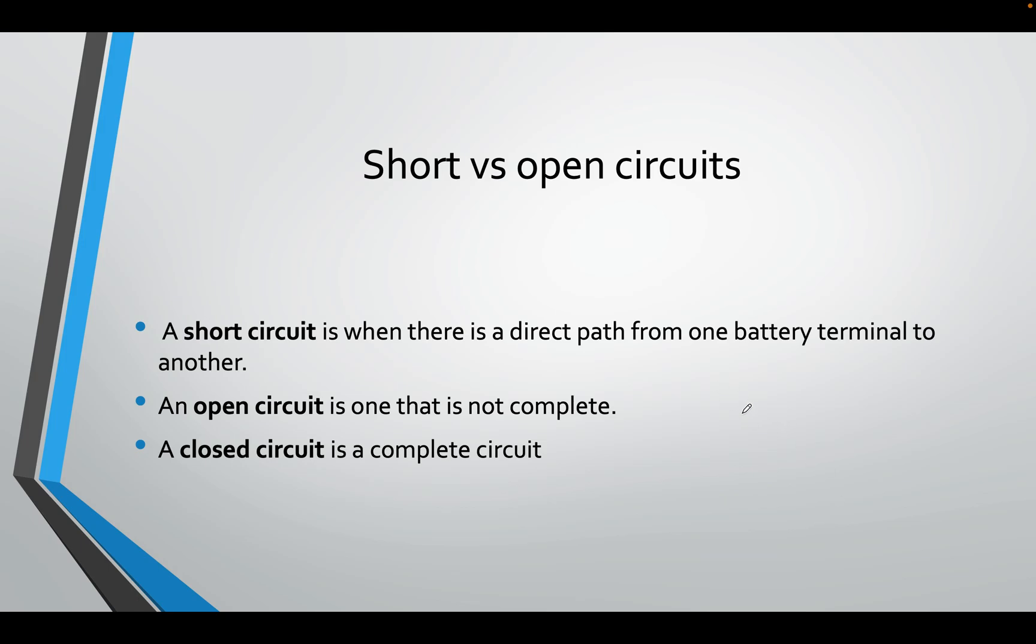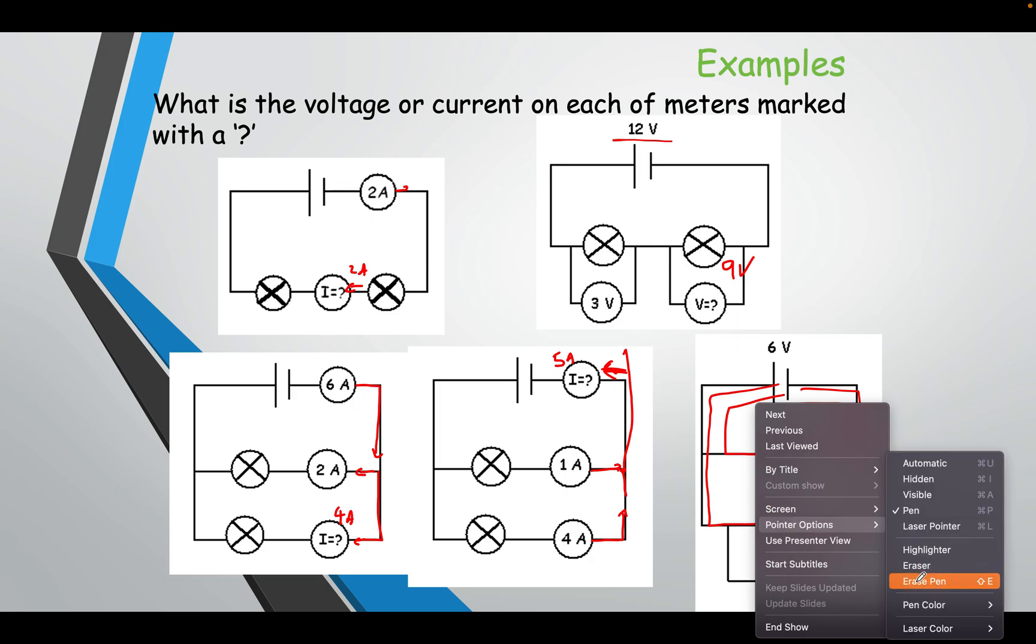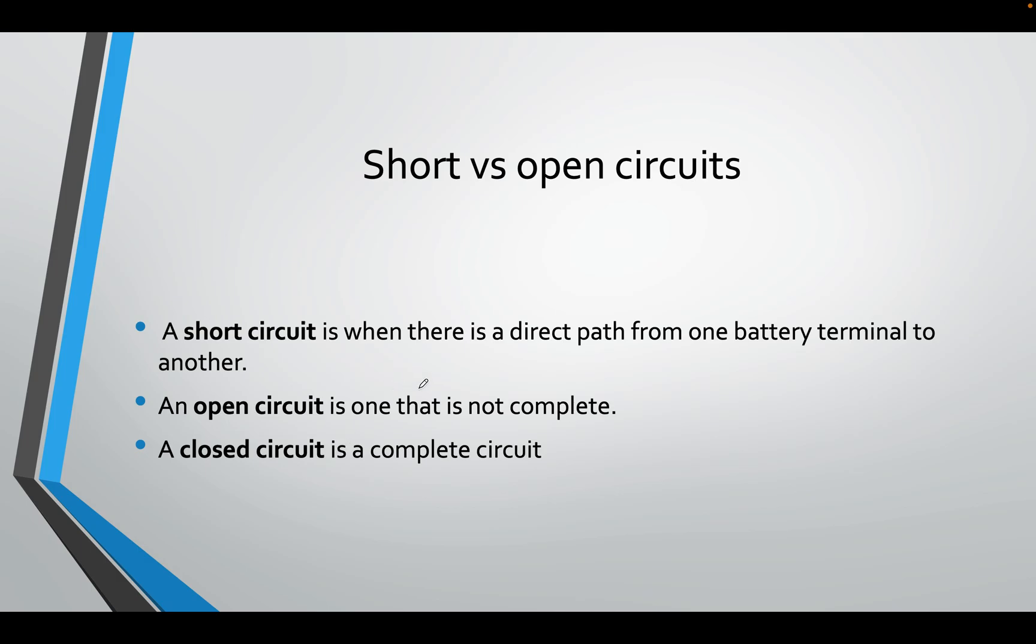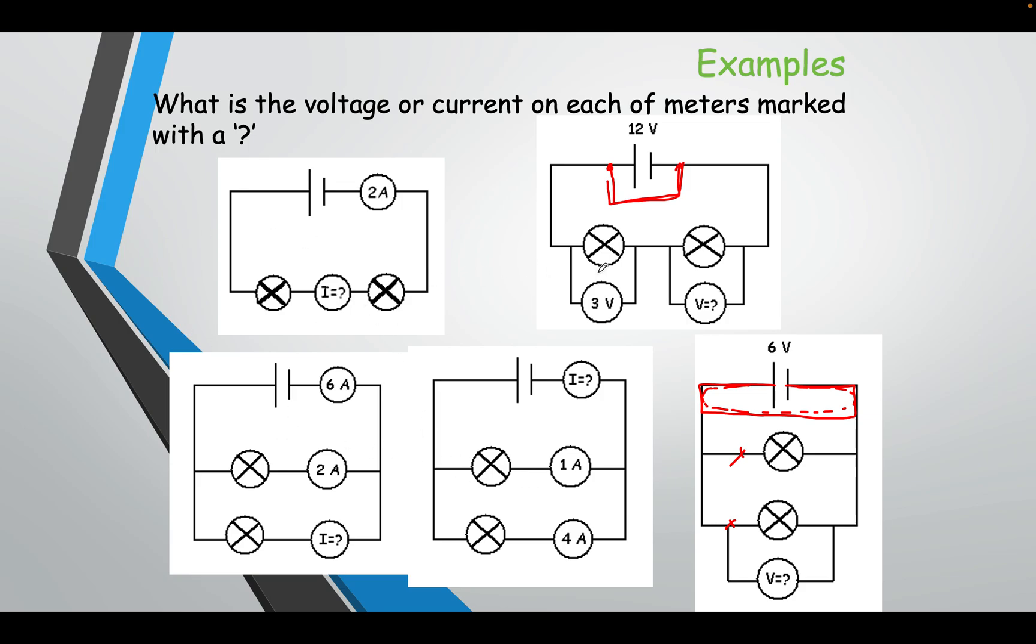Short circuit is when there is a direct path from one battery terminal to another. Which basically means, let's say I had one of these and I actually drew a wire coming like this and I cut across everything and I went this way. Now I've realized that the current can come through here only. It will not go through any of the components because current is lazy. It will pick the easiest path. So if I end up shorting my circuit in any way, the current will go that way only. And it can be quite dangerous. Open circuit is not complete. Maybe I missed a wire. A closed circuit is any of these, which is a complete circuit.